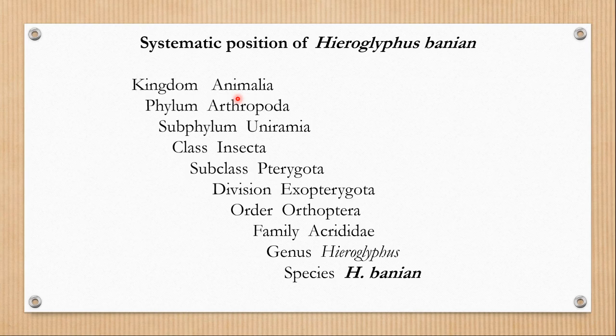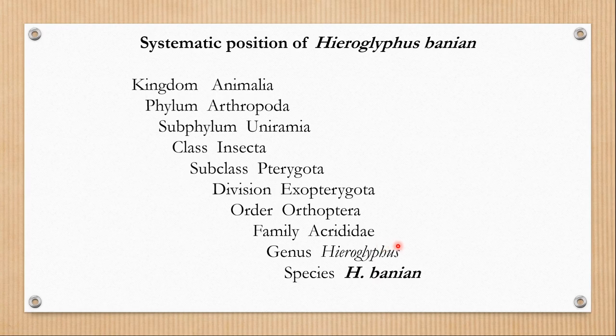Hieroglyphus banian belongs to phylum Arthropoda, subphylum Uniramia, class Insecta, subclass Pterygota, division Exopterygota, order Orthoptera, family Acrididae, genus Hieroglyphus and species Hieroglyphus banian. If you have seen my video on order Orthoptera, you already know which ones are the grasshoppers and the characters of grasshoppers. Hieroglyphus banian is a common grasshopper which is a pest of rice.